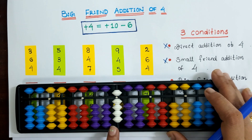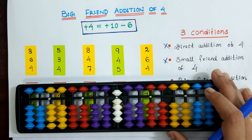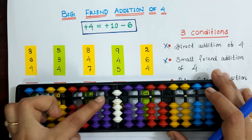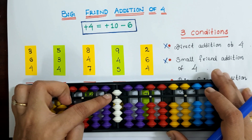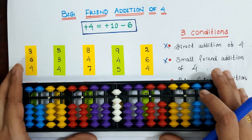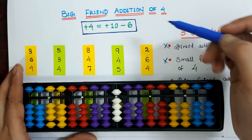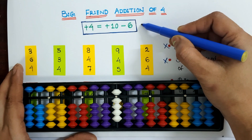The second condition is that we can't apply the small friend addition of 4, because we have already used the bead of 5 at the one slot. So, in this video we are going to learn big friend addition of 4. The formula is: plus 4 is plus 10 minus 6.